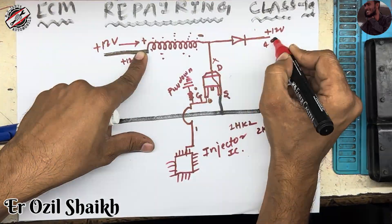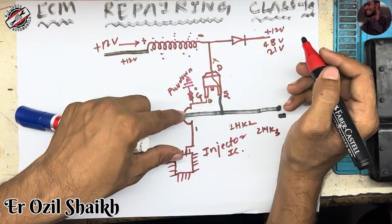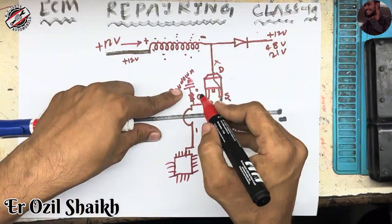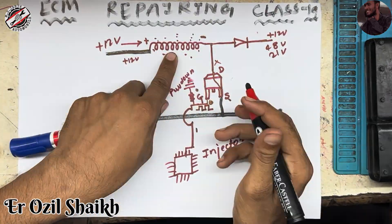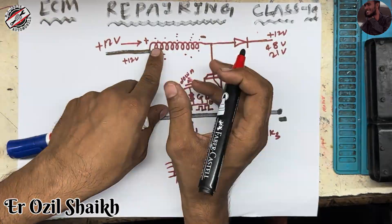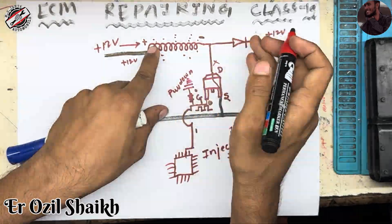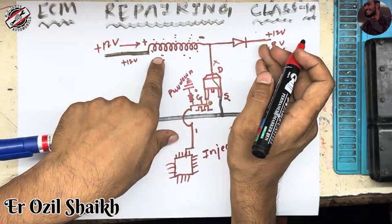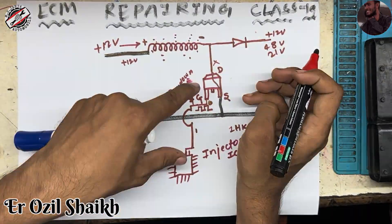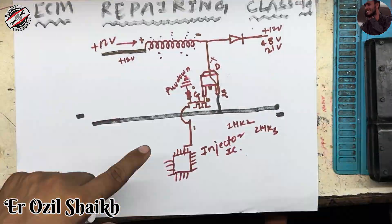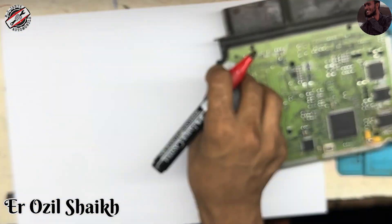This ground will not pass anymore, and the voltage stored in the coil pushes out suddenly at full speed. At that point you get a high voltage output — like 48 volts or 21 volts, whatever you need. When we switch on-off, on-off continuously, this coil charges and discharges repeatedly. This repeated charging and discharging creates the high voltage. This is the basic step to generate high voltage.